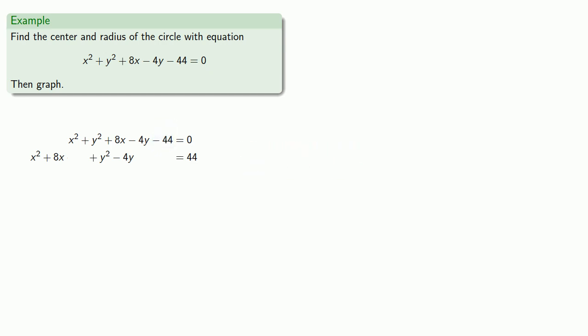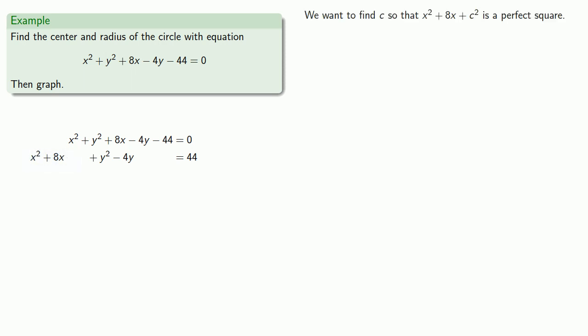Now we want to make sure all x terms are part of a perfect square. We want to find c so that x squared plus 8x plus c squared is a perfect square. Completing the square on x: the first term, x squared, is the square of x, and the last term, c squared, is the square of c.